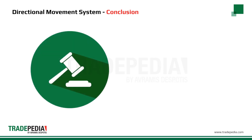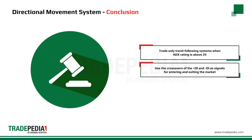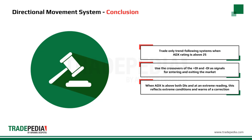When using the directional movement system, trade only trend-following systems when the ADX rating is above 25. Remember that the ADX level reflects the degree of directional movement, not the direction itself. Use the crossovers of the plus DI and minus DI as signals for entering and exiting the market. Note that when ADX is above both DI's and isn't at an extreme reading, this reflects a trend that is overbought or oversold and could act as a warning towards a correction. When the ADX is below both DI's, or below the 20 to 25 area, avoid trend-following systems since little or no directional movement is indicated.